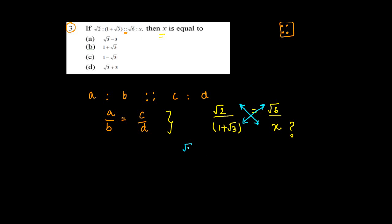So you get root 2 times X is equal to root 6 times 1 plus root 3. If you just take root 2 to the other side, you can write it down as X is equal to square root 2.